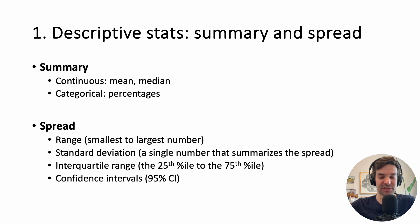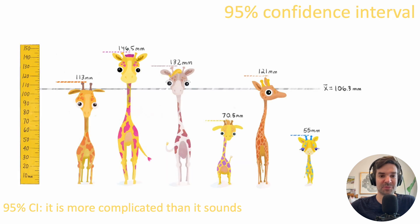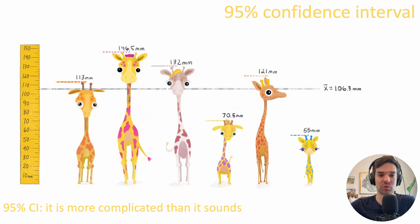Next up: 95% confidence intervals. These are more complicated than they sound — just take my word for it. But if you wanted to calculate one yourself, you could put all the individual numbers into ChatGPT and ask it to provide a 95% confidence interval, and there's the result at the top.